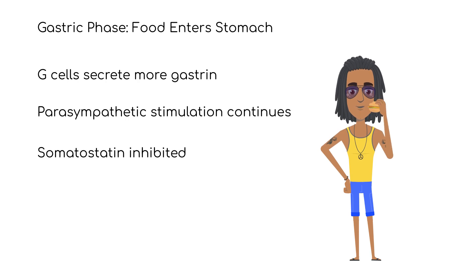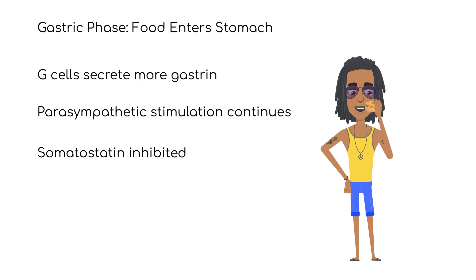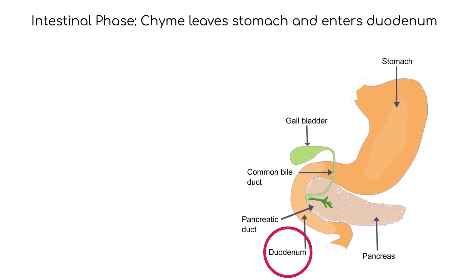Somatostatin works to inhibit gastric secretions, and the parasympathetic nervous system inhibits somatostatin, which then increases gastric secretions. Once food leaves the stomach, the intestinal phase is activated.